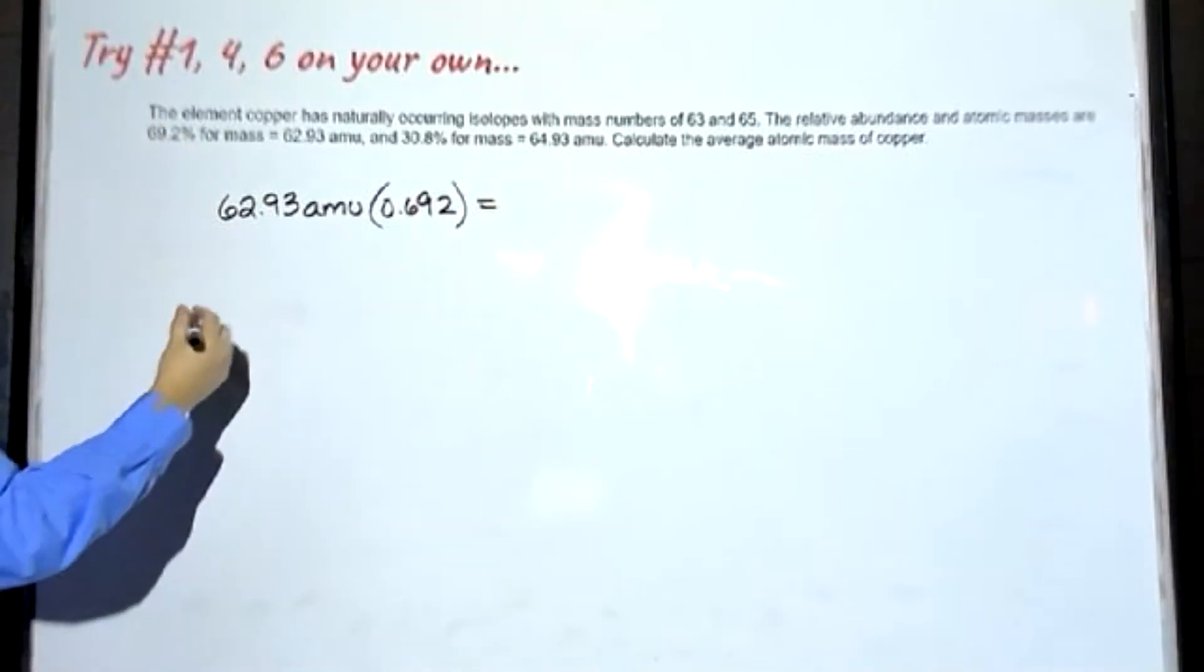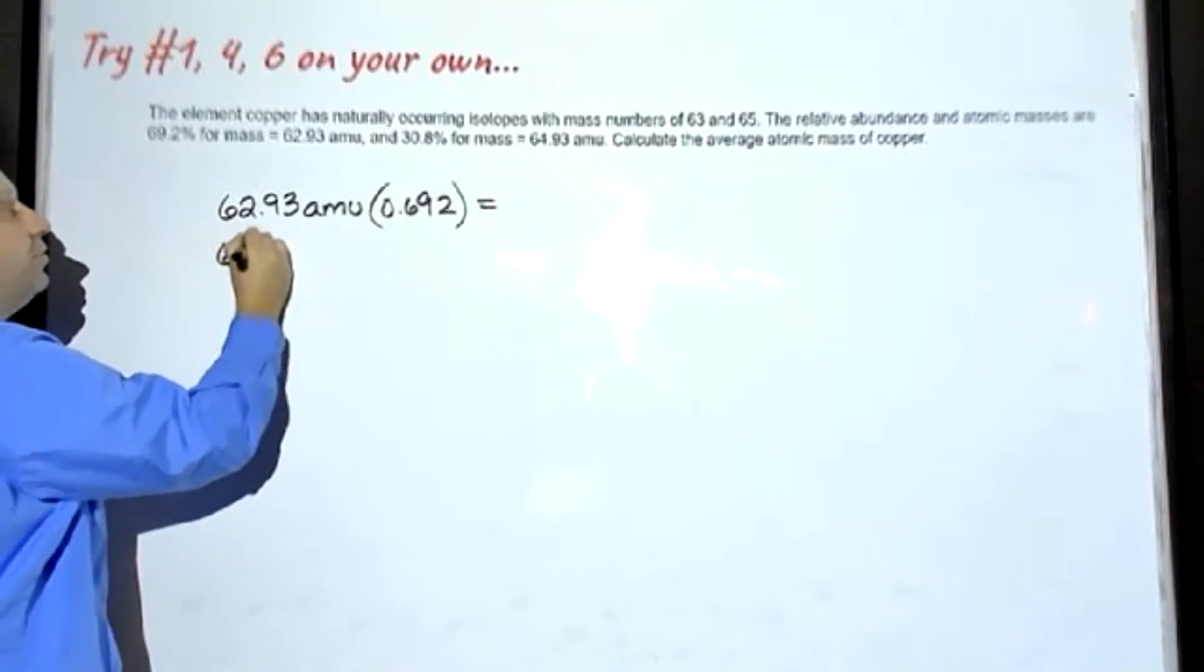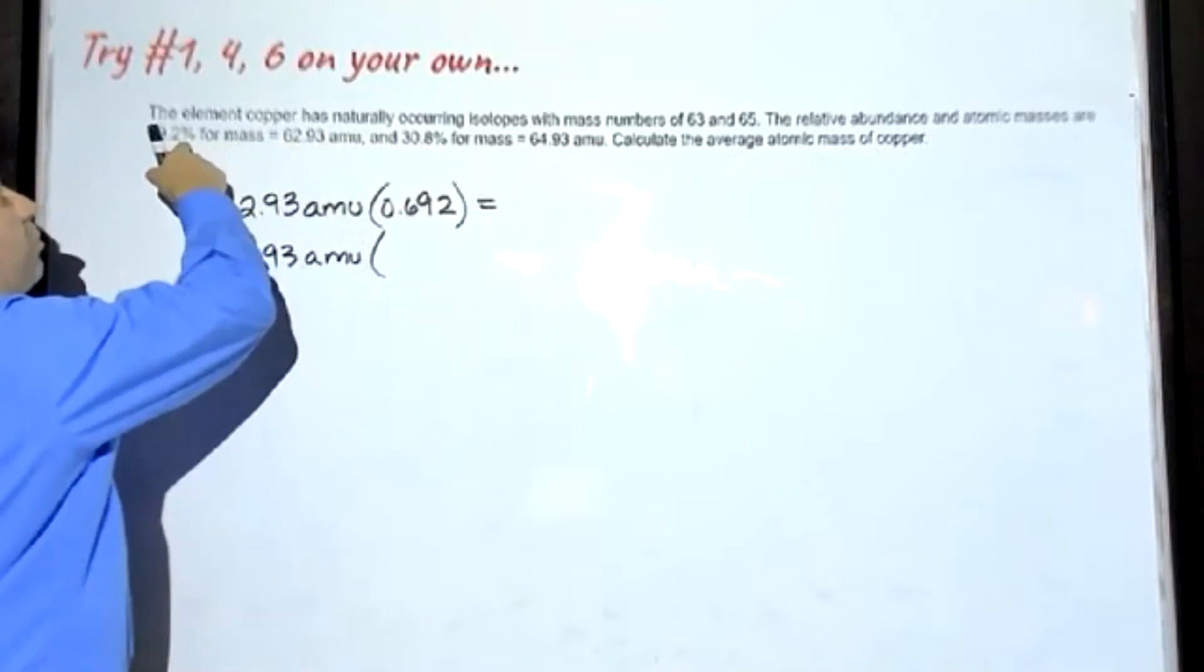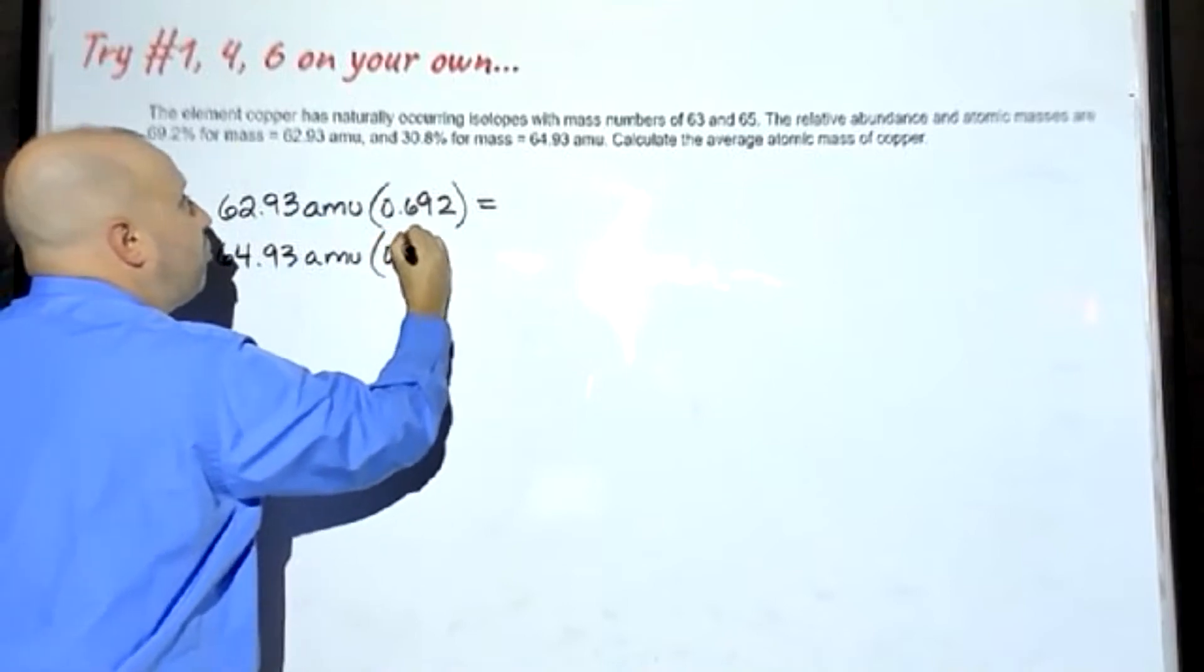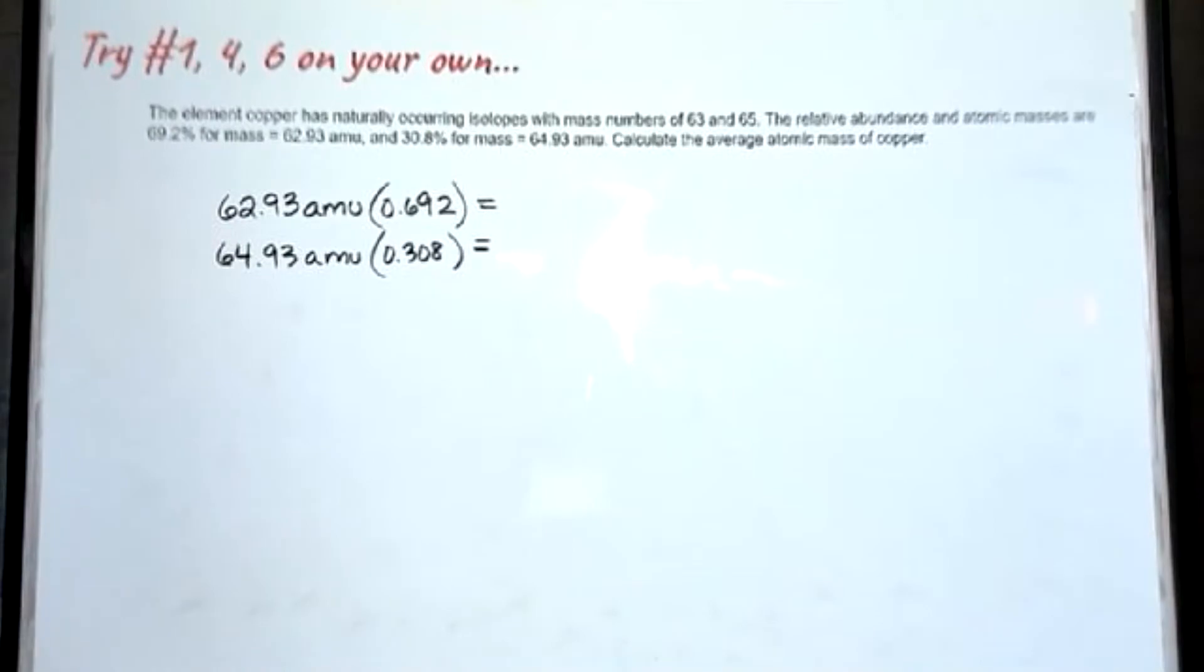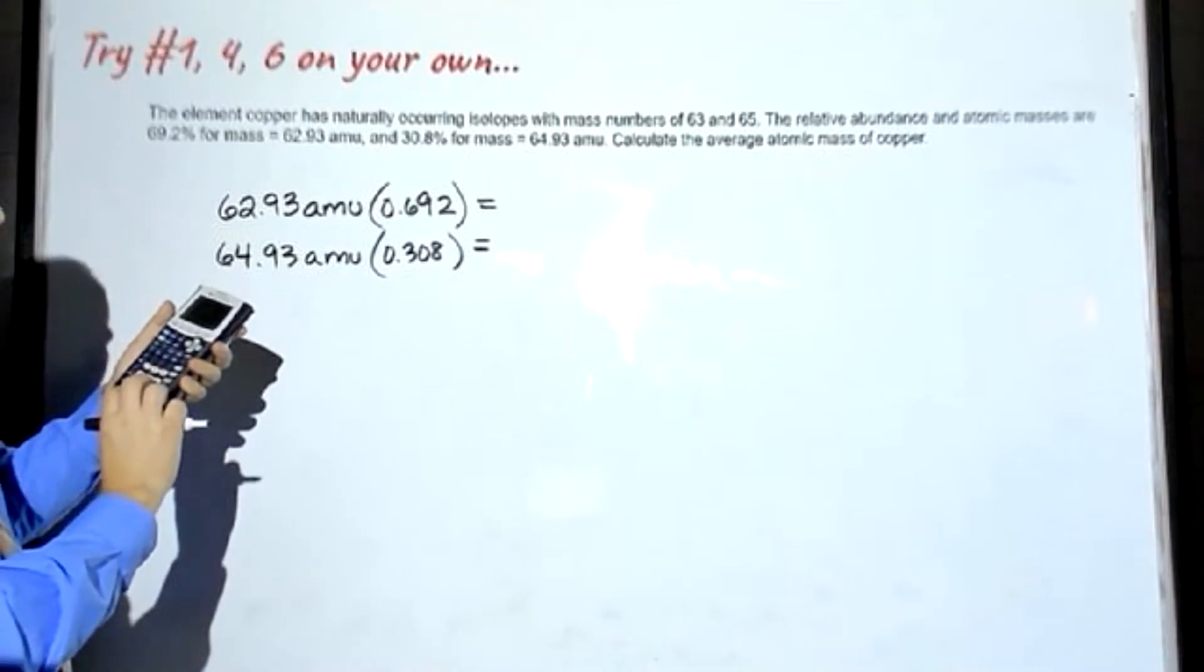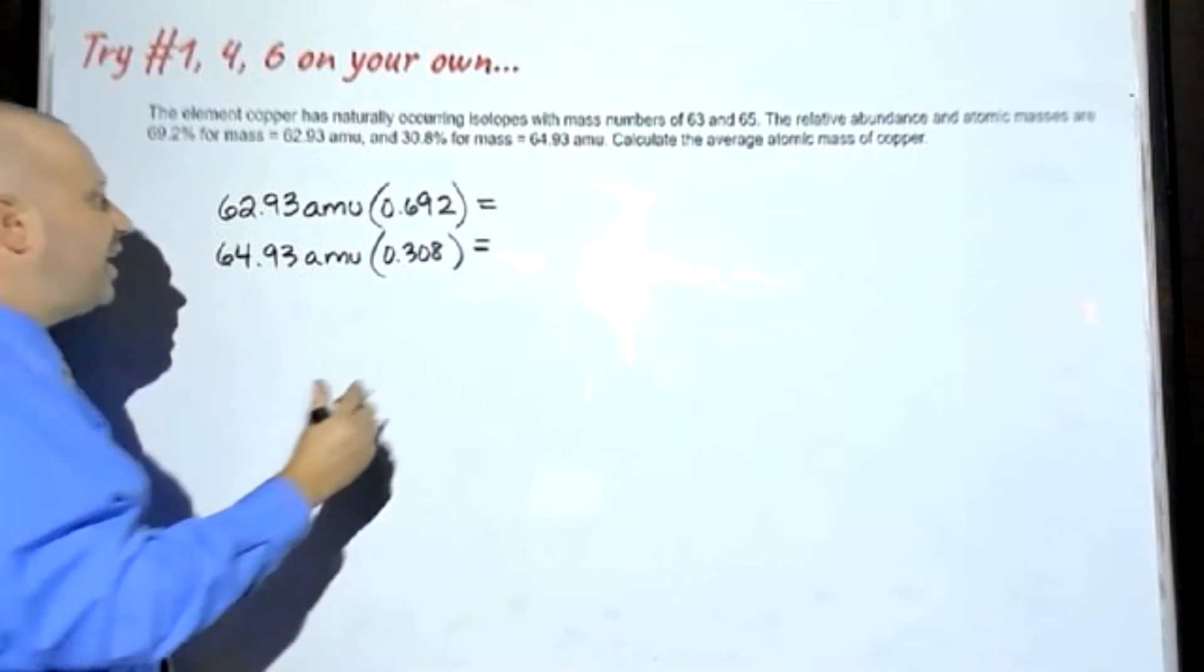And for the second isotope, we have a mass of 64.93 AMU. This one has a percent of 30.8. Remember, we're dividing both of these percents by 100, so we get 0.308 for that one.